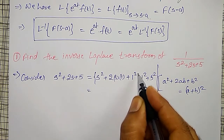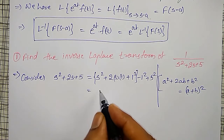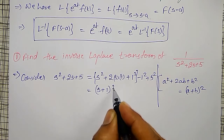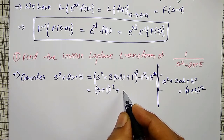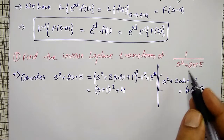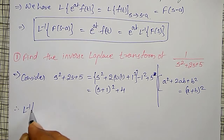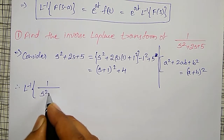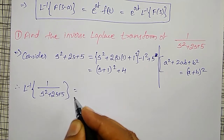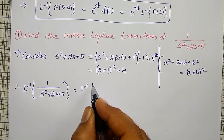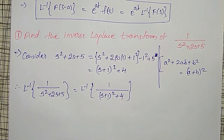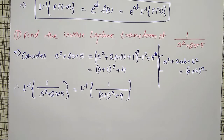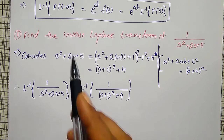Therefore, 1 divided by s squared plus 2s plus 5 can be replaced by 1 divided by s plus 1 whole squared plus 4. Observing the denominator, wherever s appears, it is with s plus 1. Therefore, I can now apply the first-shift property. Comparing with the property, a is equal to minus 1 here. So I multiply by e to the power minus t and find the Inverse Laplace Transform of F of s, replacing s plus 1 by s.